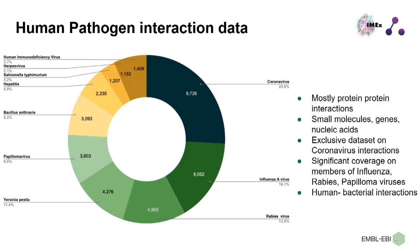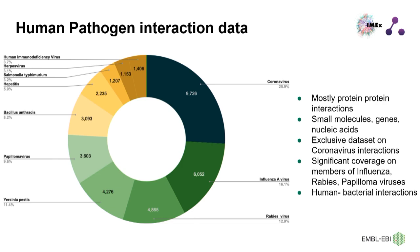Likewise, we have captured human pathogenic molecular interaction data. I have numbers for the major species — mostly from the coronavirus, which we started focusing on during the pandemic, with more than 129 member species from that family. We also have a lot of information from influenza, rabies, papillomavirus, and bacterial information as well. We have mostly focused on protein-protein interactions, but we still have information on mRNA and microRNA interactions which form the regulatory network, and small molecules, genes, and nucleic acids are included too.